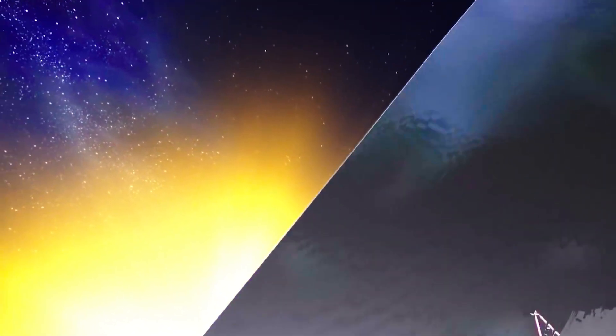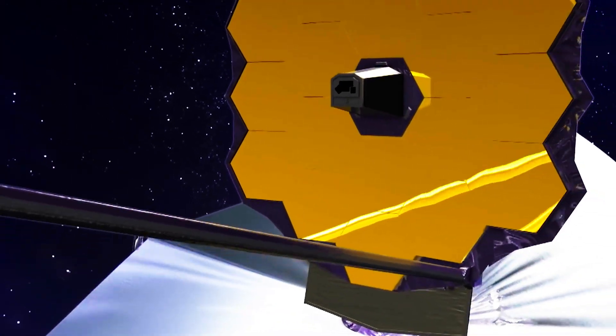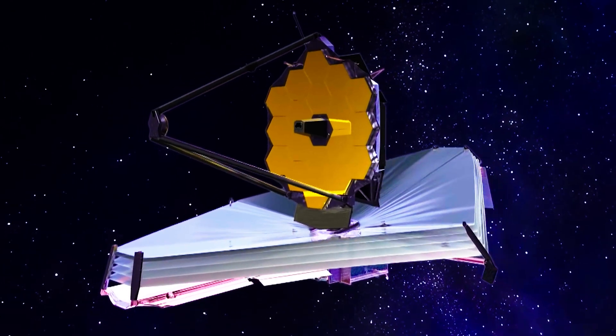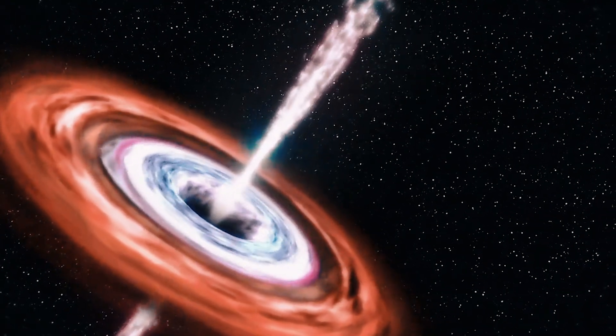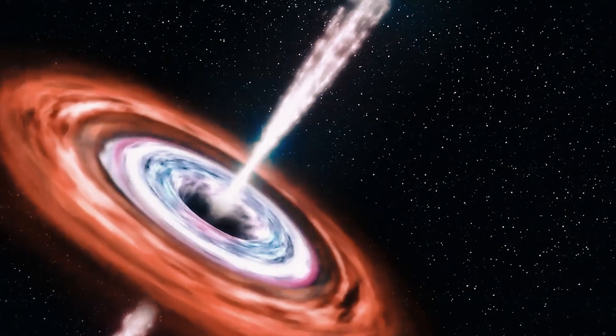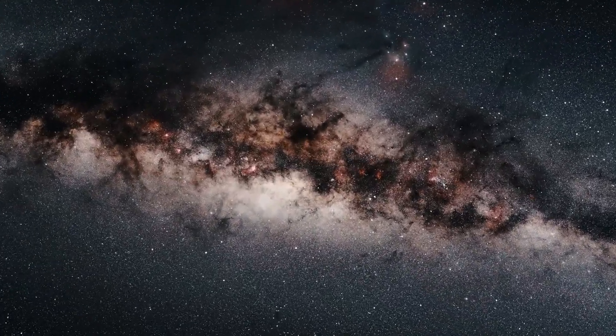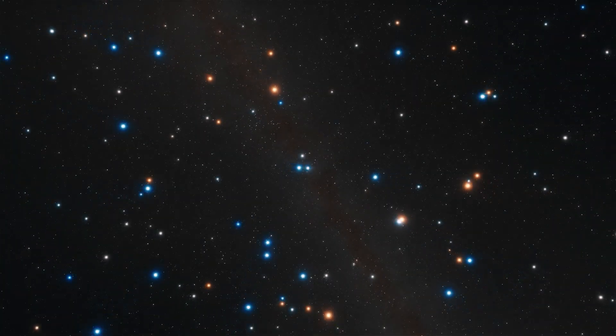The James Webb telescope is so important because it will find the first galaxies that formed in the early universe, and it will also see stars forming planetary systems. If the dark matter is comprised of primordial black holes, more stars and galaxies would have formed around them in the early universe. And James Webb telescope will be able to see those early stars, galaxies, and universes.